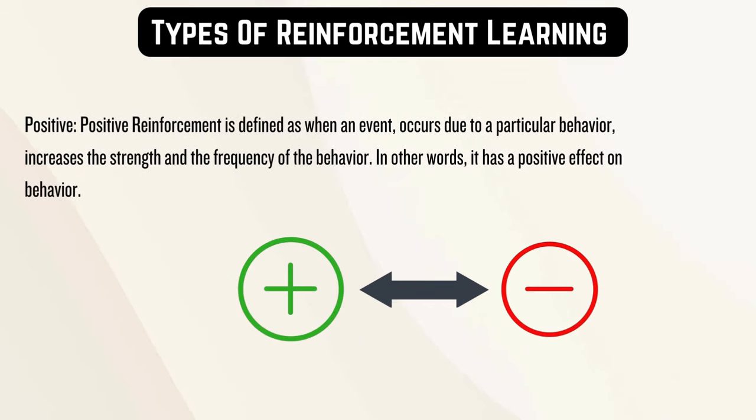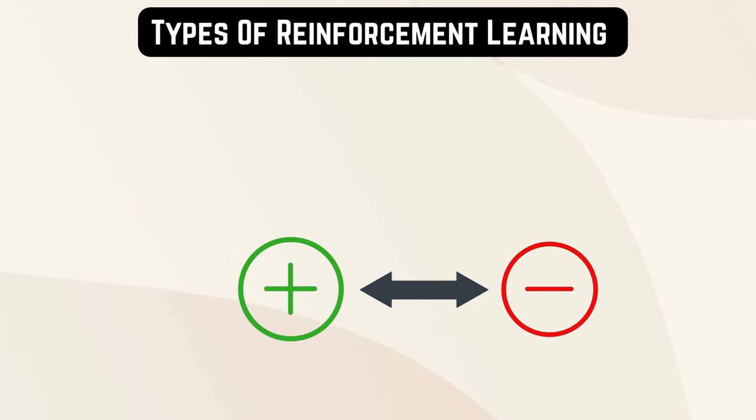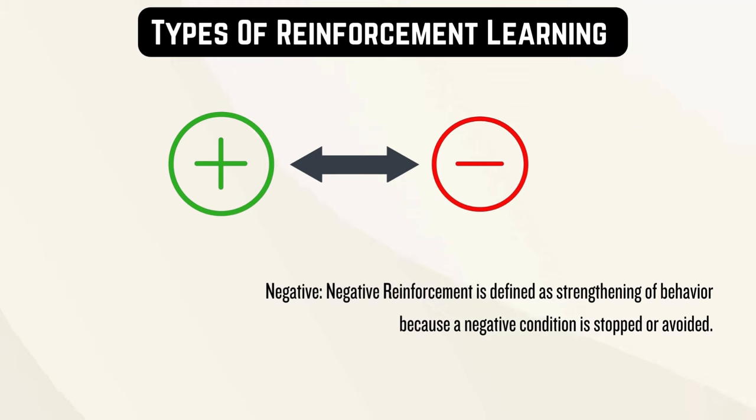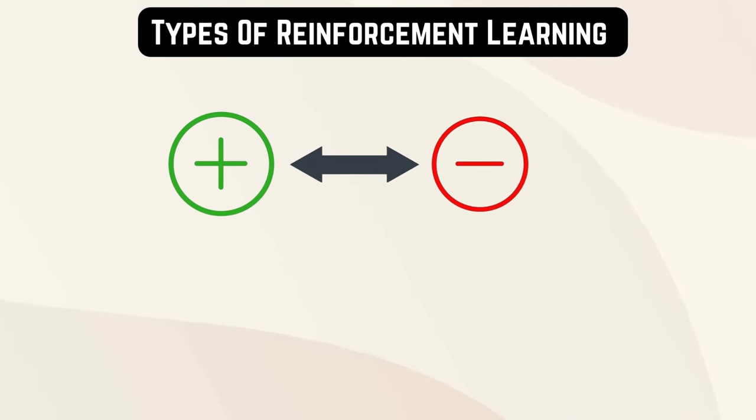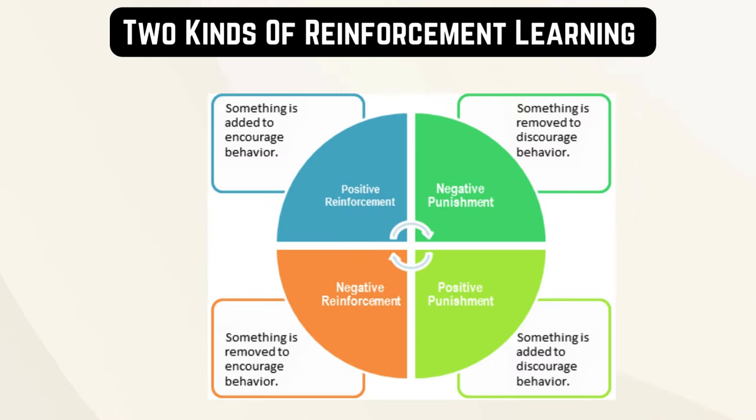There are two types of reinforcement learning: positive and negative. Positive reinforcement is defined as when an event occurs due to a particular behavior, increases the strength and the frequency of the behavior. In other words, it has a positive effect on behavior. Negative reinforcement is defined as strengthening of behavior because a negative condition is stopped or avoided.